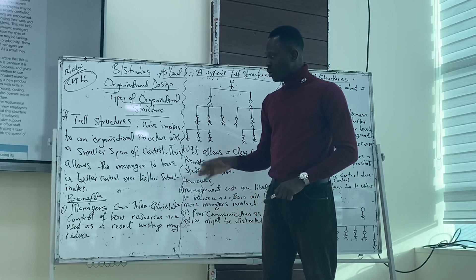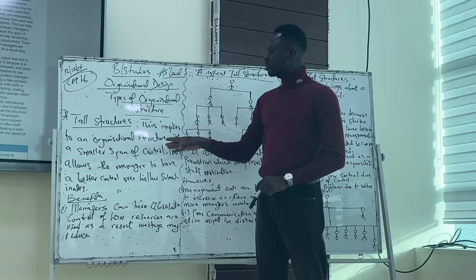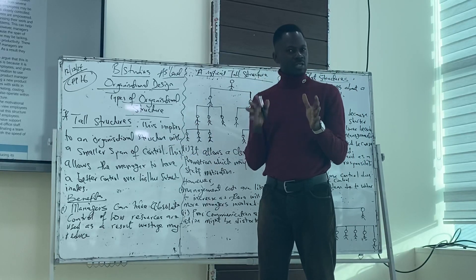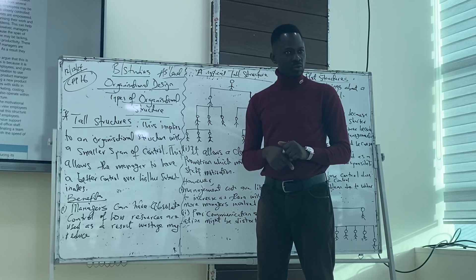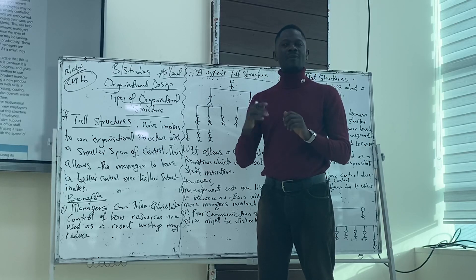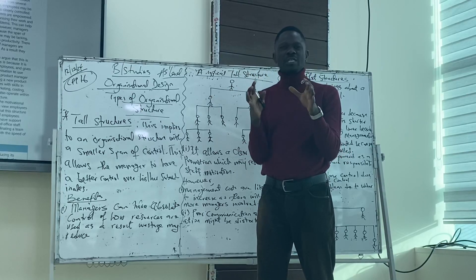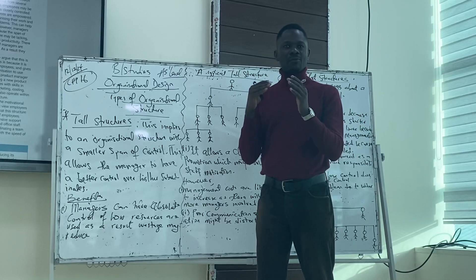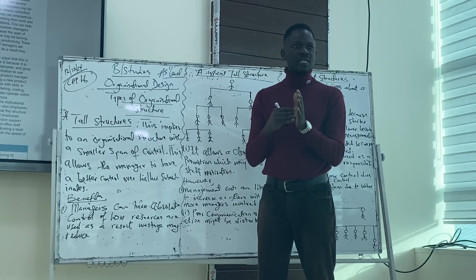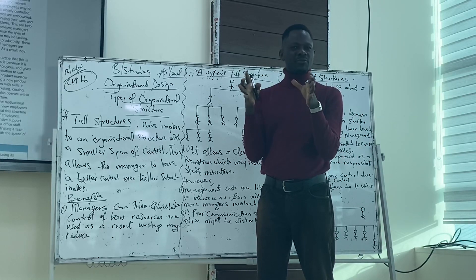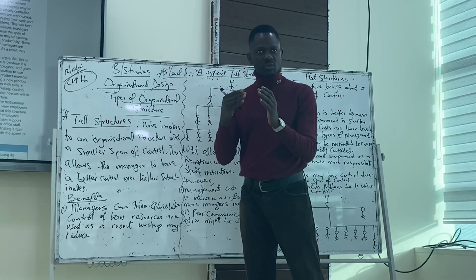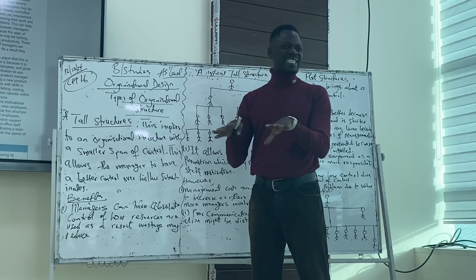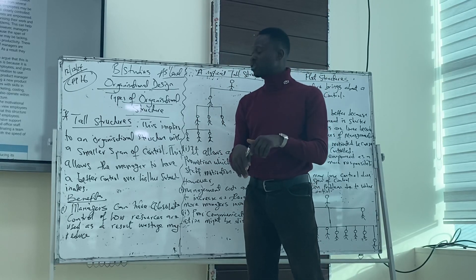Why do we call it a tall structure? We call it a tall structure because it has a smaller span of control, which means we have different managers controlling a few numbers of subordinates. That's why it's a tall structure, meaning in that structure we have a lot of managers in that organizational structure.